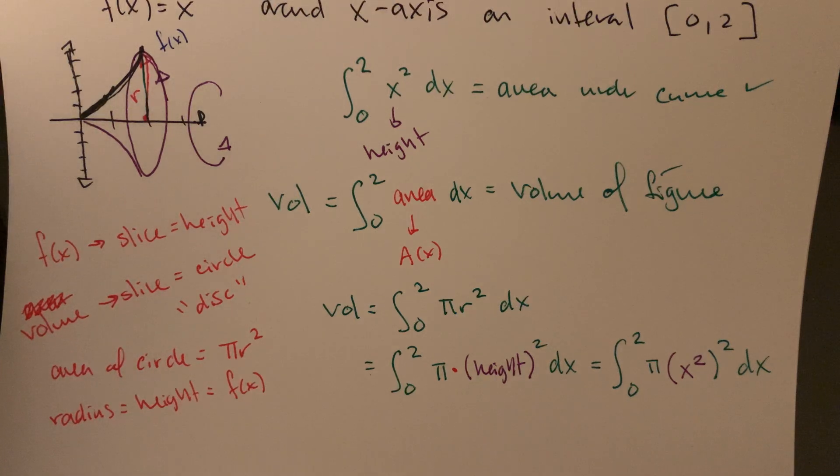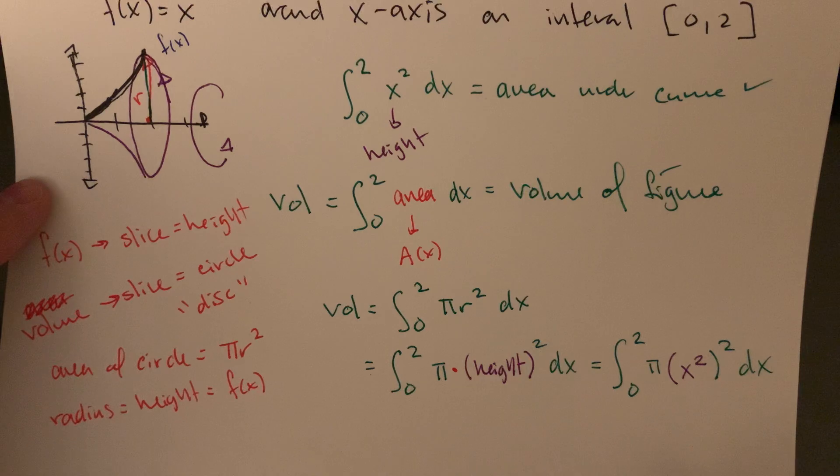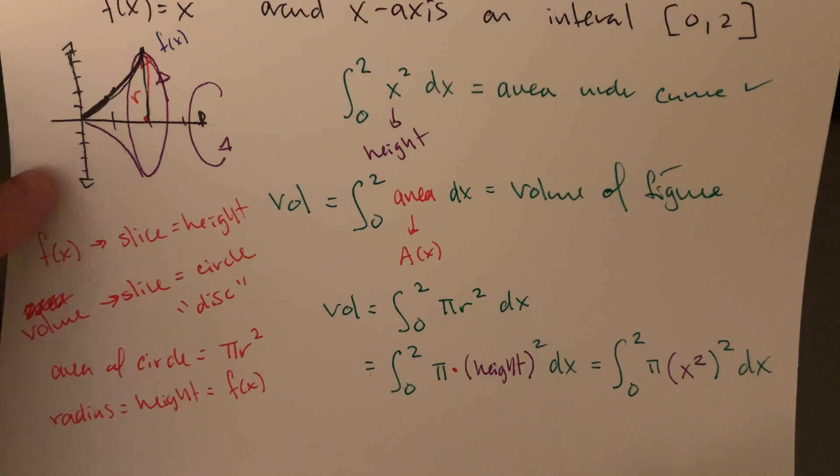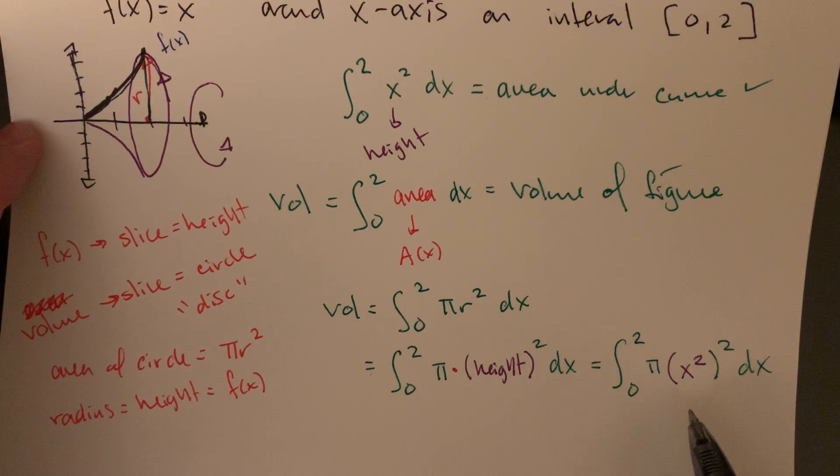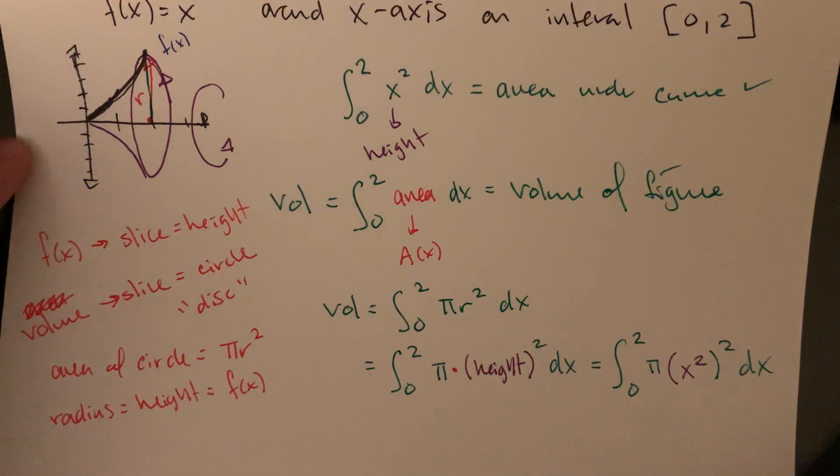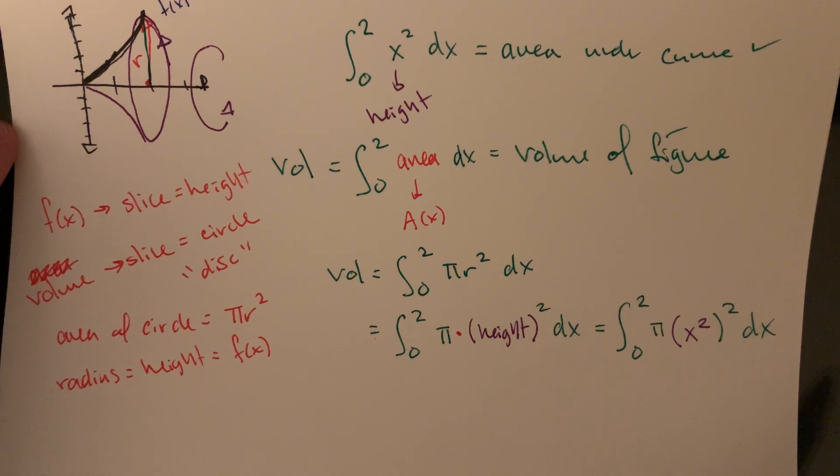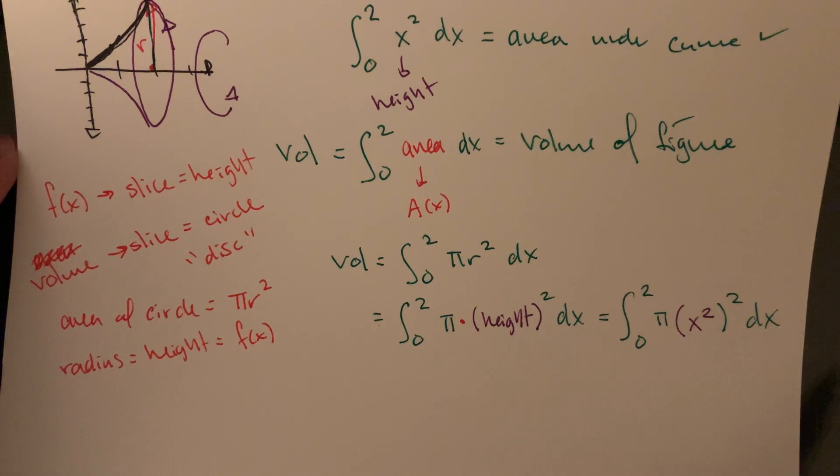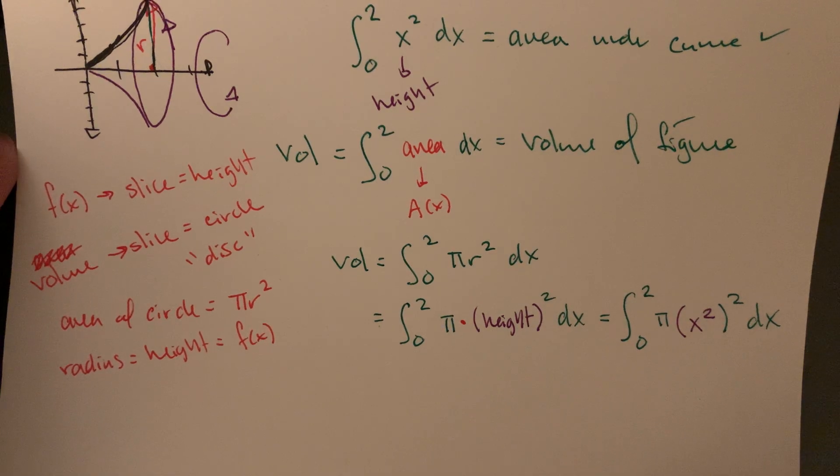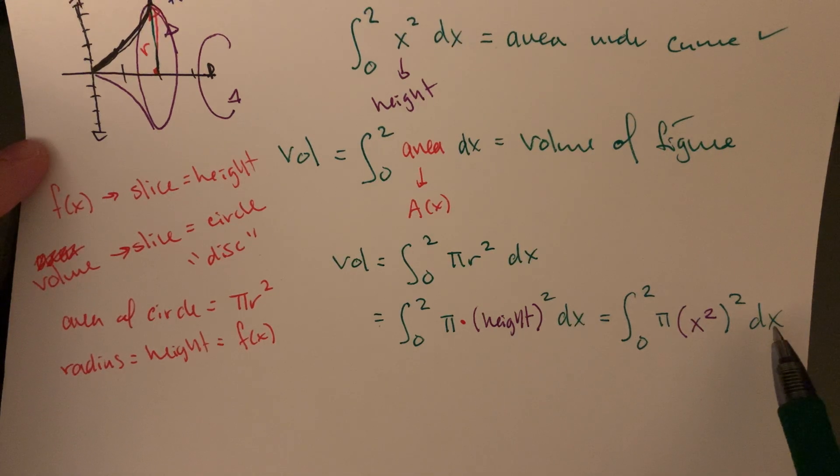The radius here is the same thing - it syncs up with the height of the original function, which in this case was x². So if we integrate and add up all of these different areas of the disks, what we would get from slicing our three-dimensional volume down into two-dimensional slices - we're getting circles. The radius of the circle syncs up with the height. So I get π times the radius squared, which is π times x² squared.